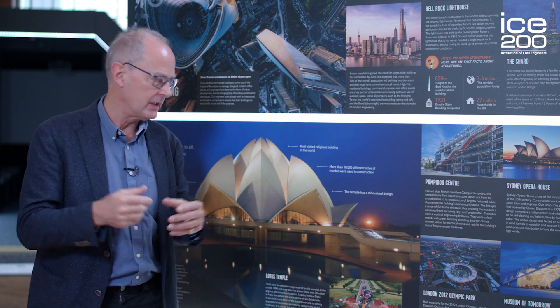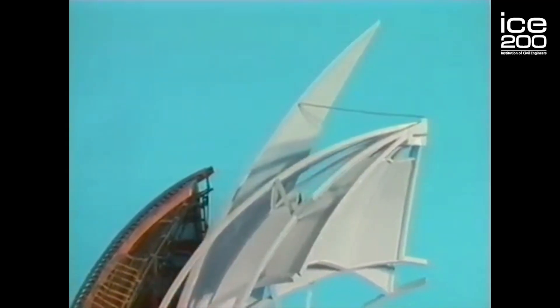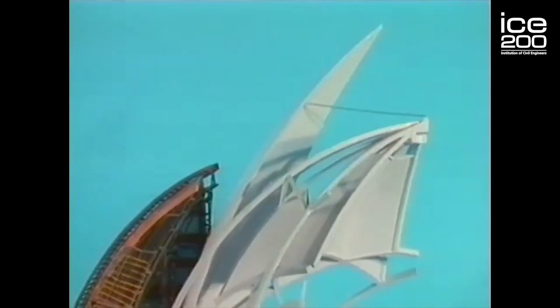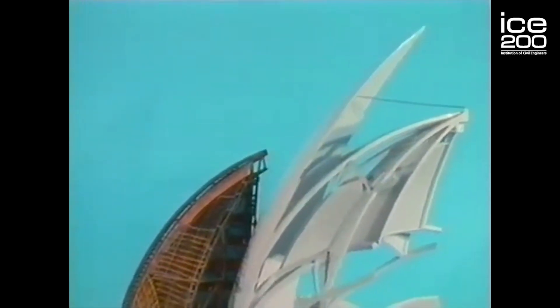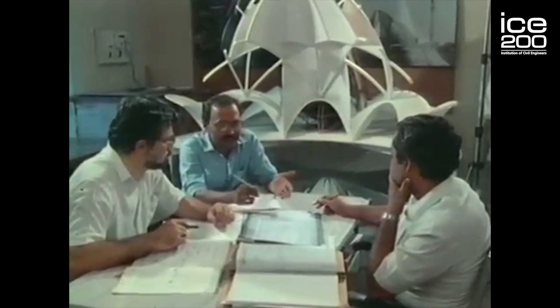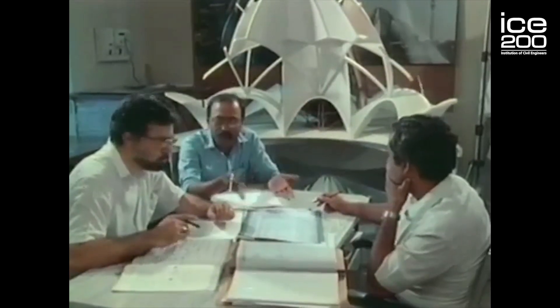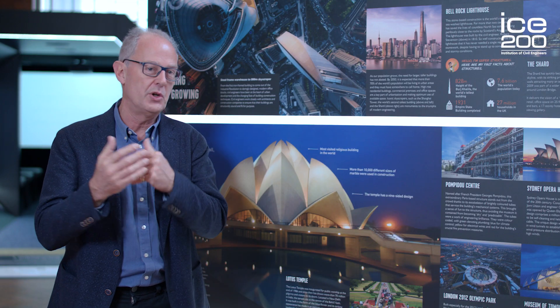Nine times three — they're all concrete shells. Our job as the engineers was to work out how to define the geometry of those shells so that somebody could build them, and of course work out how thick they needed to be, how strong they needed to be, and all that.